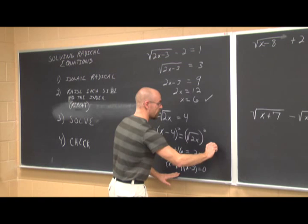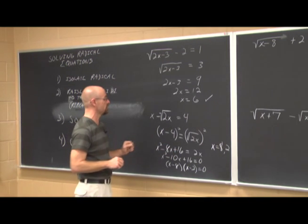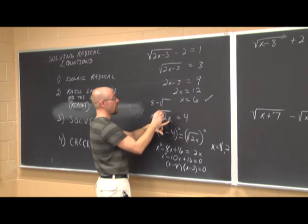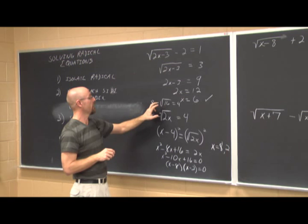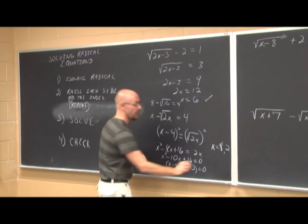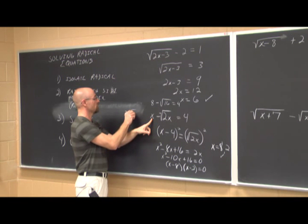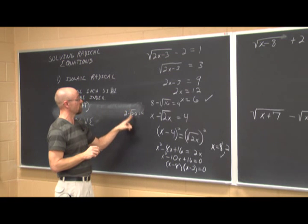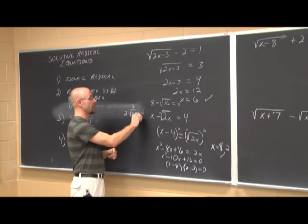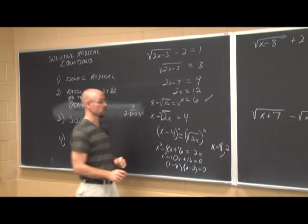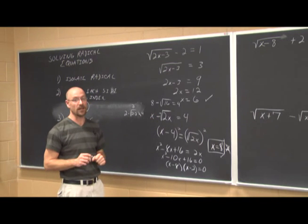This factors to x minus 8 times x minus 2. Negative 8 times negative 2 is positive 16, and they sum to negative 10. So x equals 8 and x equals 2. Checking x equals 8: 8 minus the square root of 16 equals 8 minus 4, which is 4. That's true. Checking x equals 2: 2 minus the square root of 4 equals 2 minus 2 equals 0, which does not equal 4. So x equals 2 is extraneous. The only solution is x equals 8.